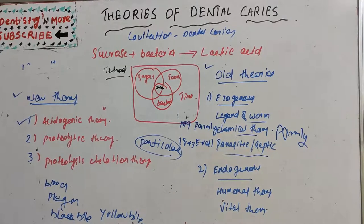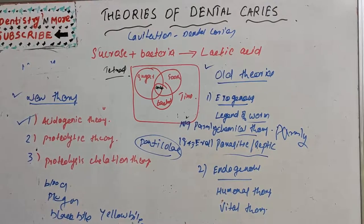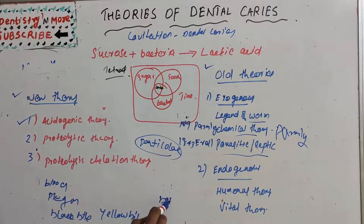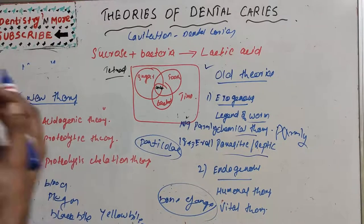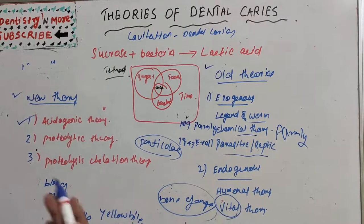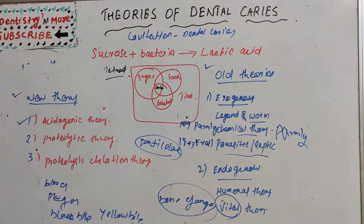The second endogenous theory is the vital theory, which came in the 18th century. This vital theory explains that tooth decay originated like bone gangrene — in a similar way to how bone gangrene is caused, dental caries also happens from within the tooth itself. That is the vital theory.